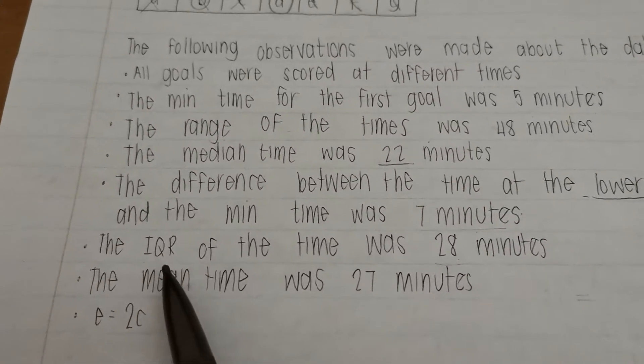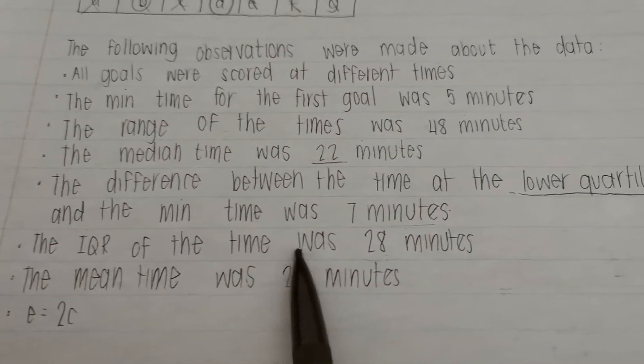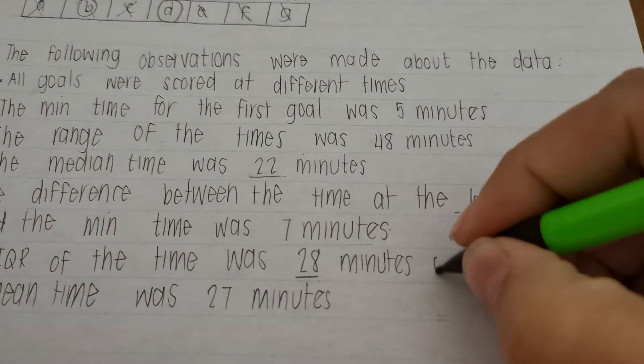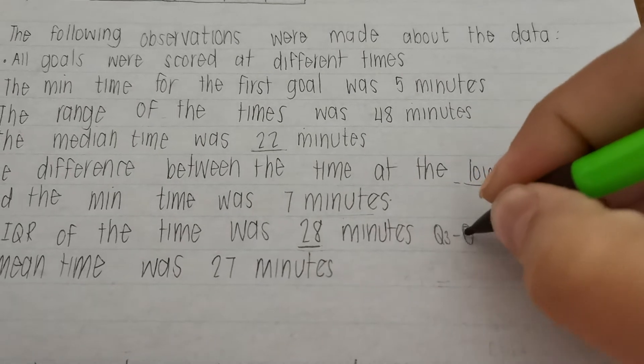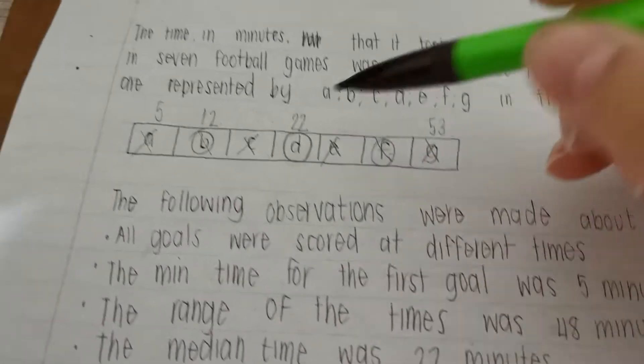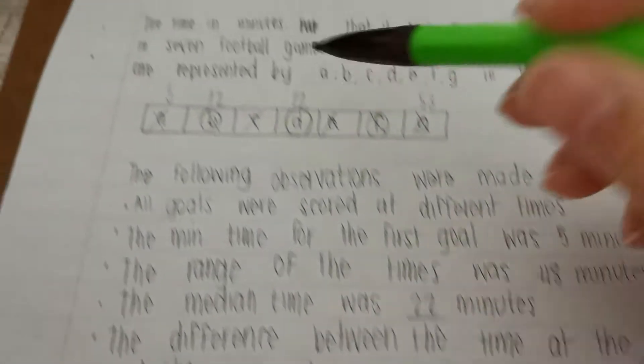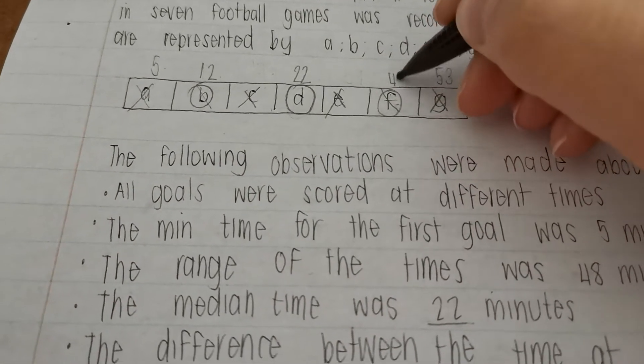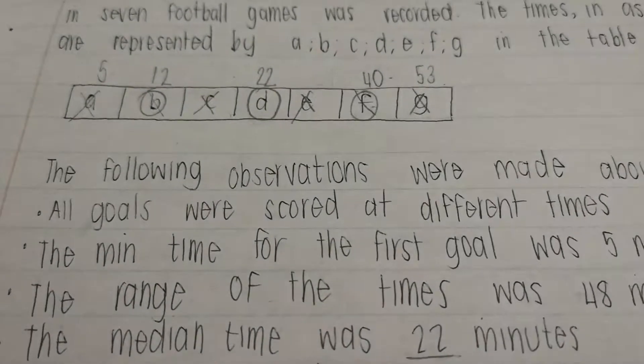Then it says the interquartile range of the time was 28 minutes. So we know interquartile range is Q3 minus Q1. So let's go. Q3 would have been over here. This number minus 12 should give us 28. So going backwards, we're going to say 12 plus 28 is going to give us F, which is now 40.